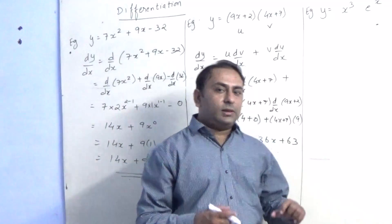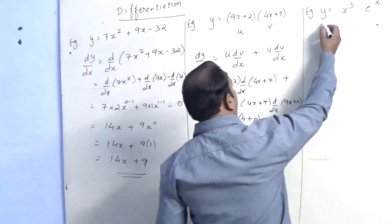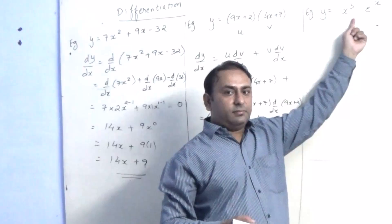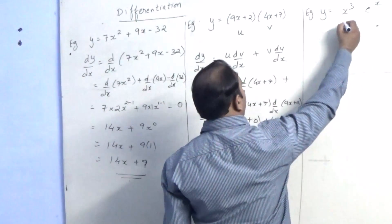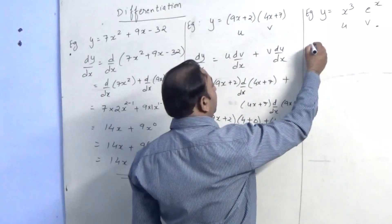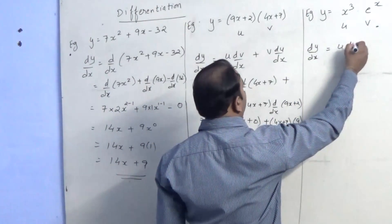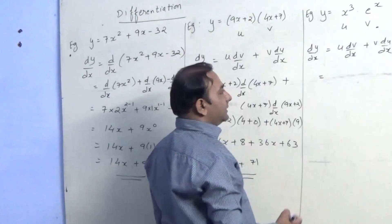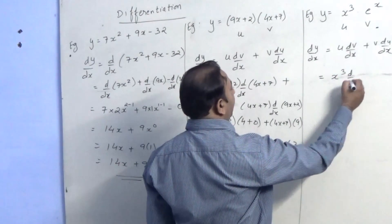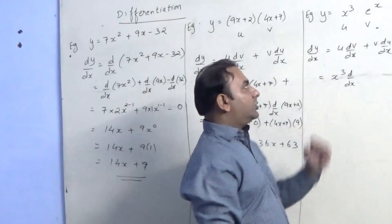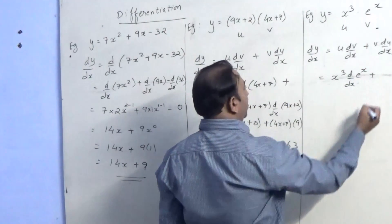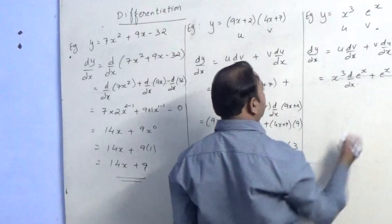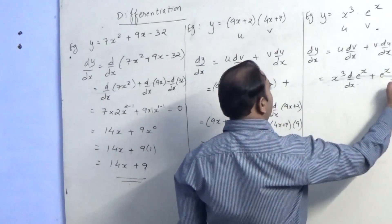Similarly, in the same way we will see one more sum of multiplication. We will take the first term as u and the second as v. Applying the multiplication rule: dy by dx equals u dv by dx plus v du by dx. Here u is x raised to 3 and dv by dx is the derivative of v, which is e raised to x. Plus v is e raised to x, and we find d by dx of x cube.